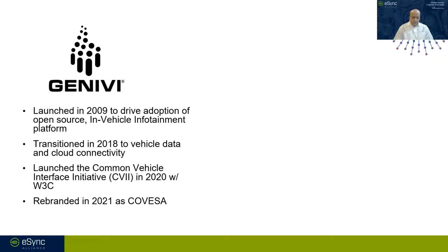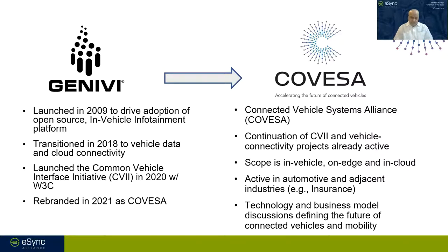Let me describe the origins of Covisa. It started as Genevieve in 2009 with a focus on in-vehicle infotainment, transitioned into vehicle data and cloud connectivity, launched a Common Vehicle Interface initiative in collaboration with W3C, and then this year changed its name to Covisa — Connected Vehicle Systems Alliance. It will continue to expand CVII. The scope is in-vehicle, on-edge, and in the cloud, supporting automotive and adjacent industries such as insurance, as well as technology and business model discussions that define the future of mobility.